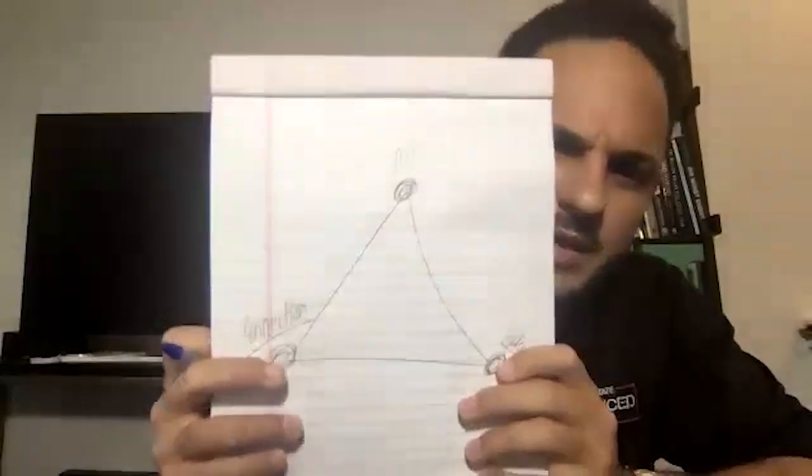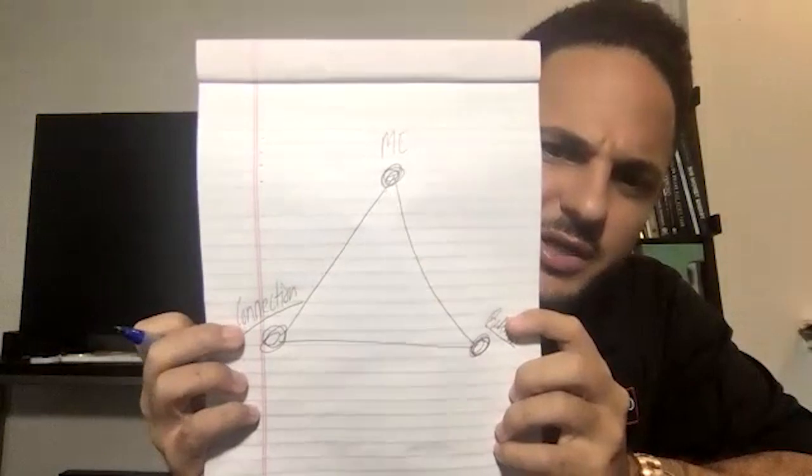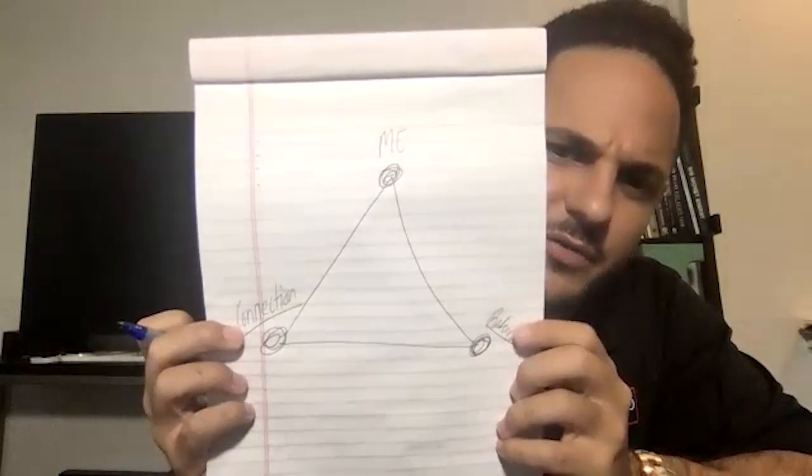This could be anybody you can think of — a family member, a friend, a client. It could be anybody you're currently speaking with. The connection is just a connection point. Now on the other circle, you're going to write the word 'referral.' So you have three points: one says 'me,' one says 'connection,' one says 'referral.' Me at the top, connection on one side, and then referral on the other side.